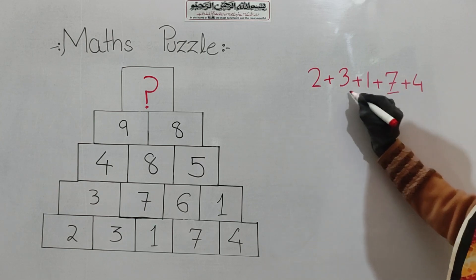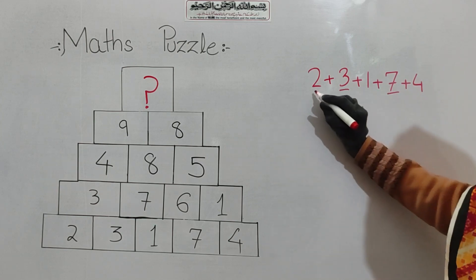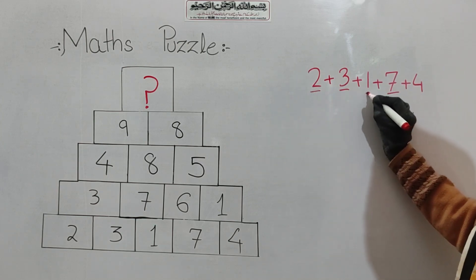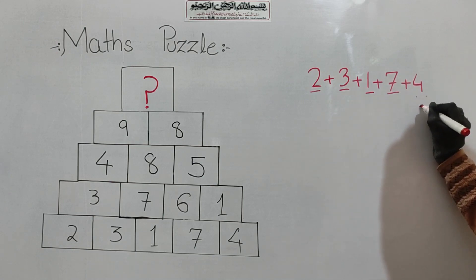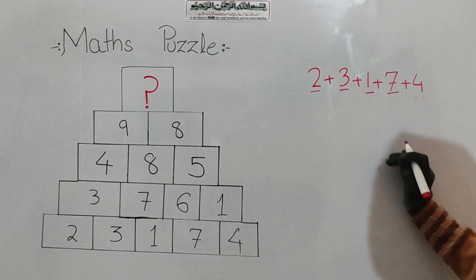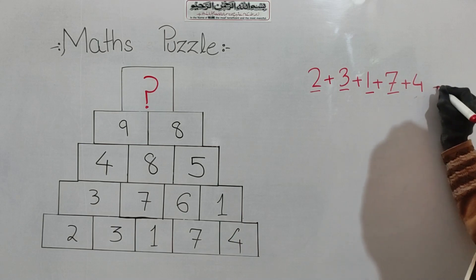So we have 17. After that, if we add all this row, 3 plus 7 plus 6 plus 1, so 3 plus 7 is 10, plus 6 is 16, plus 1, we have 17.